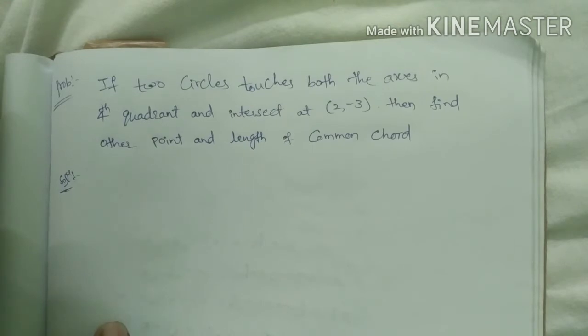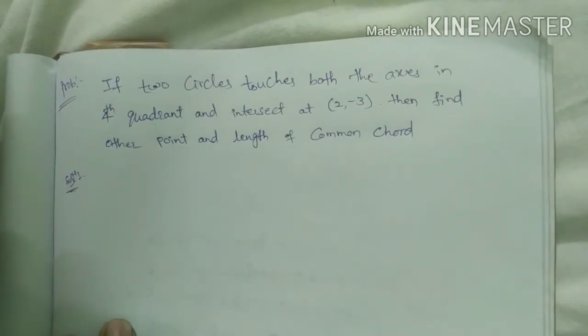If two circles touches both the axes in fourth quadrant and intersect at (2, -3), then find other point and length of common chord.